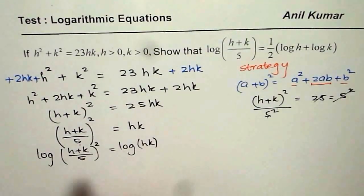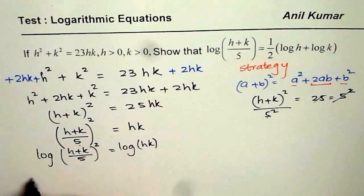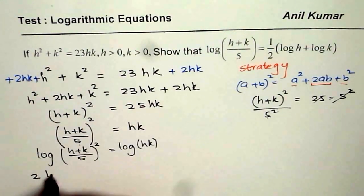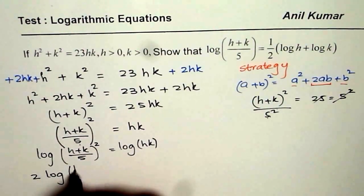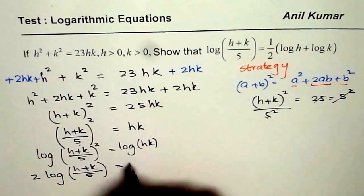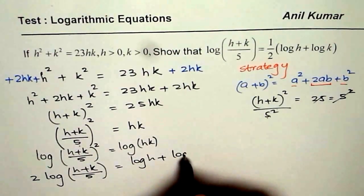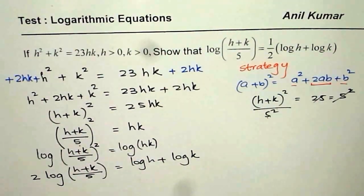Now, and this is whole square. Now, I can apply the power rule and bring this square to the left side. So I get 2log((h+k)/5) = log h + log k.